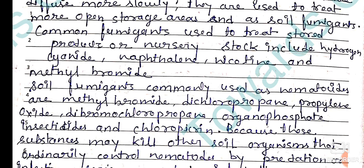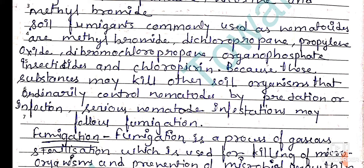Common fumigants used to treat stored products or nursery stock include hydrogen cyanide, naphthalene, nicotine, and methyl bromide. Soil fumigants commonly used as nematocides include methyl bromide, dichloropropane, propylene oxide, dibromochloropropane, organophosphate insecticides, and chloropicrin.